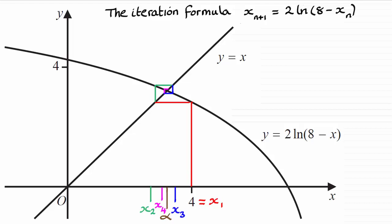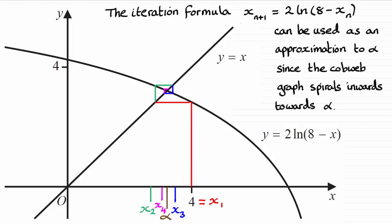So there's my cobweb design and the conclusion then is that this formula can be used as an approximation to alpha since the cobweb graph spirals inwards towards alpha.